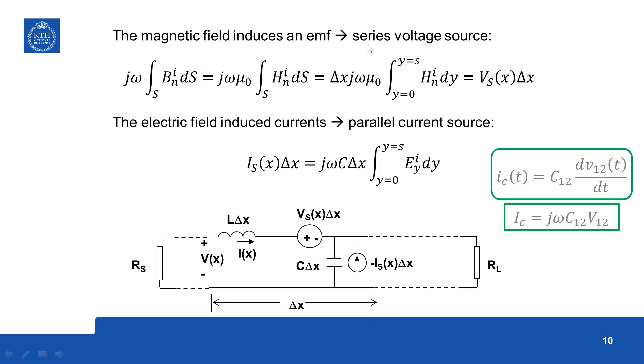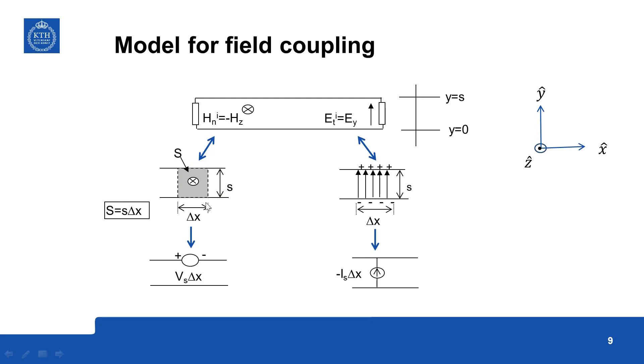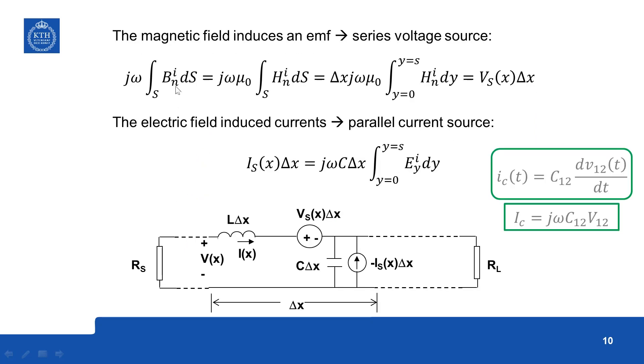So the magnetic field induces an EMF, a series voltage source, so surface integral of rate of change of the flux. So if you take this small elemental area and integrate along this area, you get an expression like this, Bn is the incident flux density and integrating over that small surface, that small surface area.